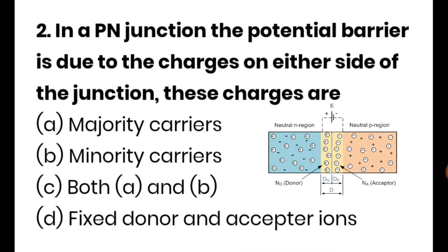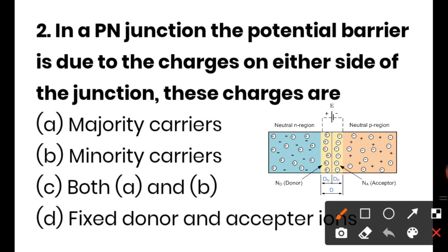The next question is: in a PN junction diode, the potential barrier due to charges on either side of the junction — these charges are called? Option A is majority carriers, option B is minority carriers, option C is both A and B, and option D is fixed donor and acceptor ions. The correct answer is option D — fixed donor and acceptor ions.